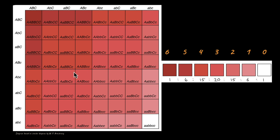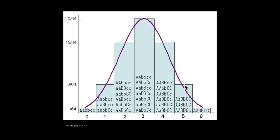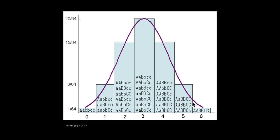Now if you were to plot the different phenotypes and their frequency in a graph, this is what you would get. On the x-axis you have the number of dominant alleles, and on the y-axis you have the frequency of these phenotypes in the population. You can fit the number of each phenotype under a bell curve, giving a continuous variation of the traits — there is no one-or-zero binary trait; it is a continuous variation.